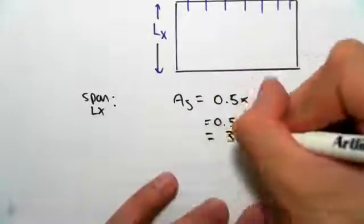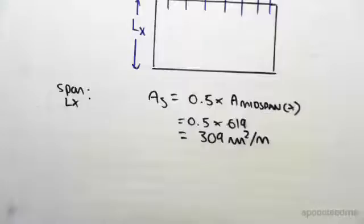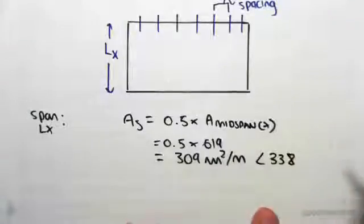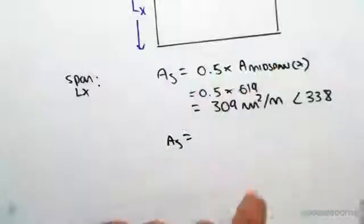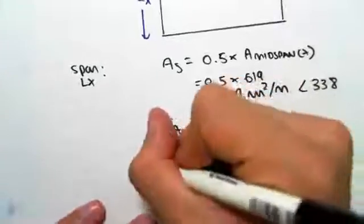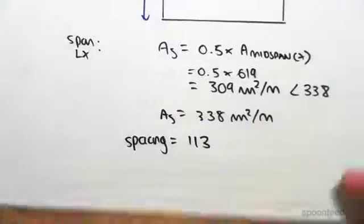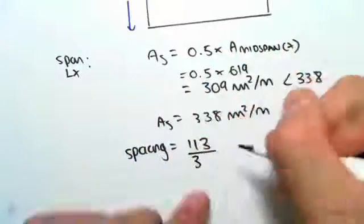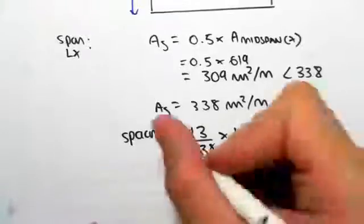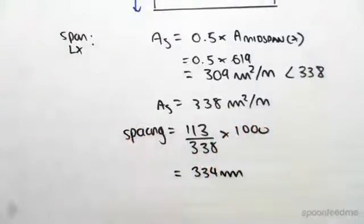We need to check that against our minimum area requirements, which is 338 mm²/m. Since 309 is less than 338, we take the area of steel as 338 mm²/m — the absolute minimum. We can then find our spacing: area of one N12 bar (113 mm²) divided by 338 mm²/m, multiplied by the unit length of 1000 mm, giving us around 334 mm. We then need to check that against...